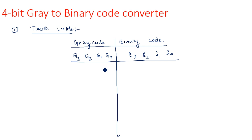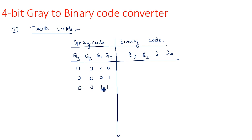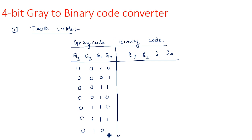Gray code representation we know very well — we consider 0 and 1, then again a mirror image of 0s and 1s. If you do all those things you will get: 0000, 0001, then 0011, 0010. It's a unit distance code or a mirror image code. Next: 0110, 0111, 0101, 0100.